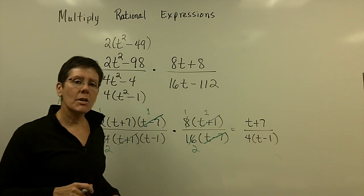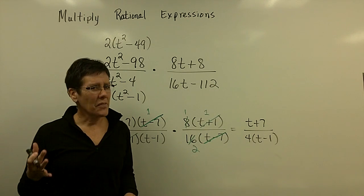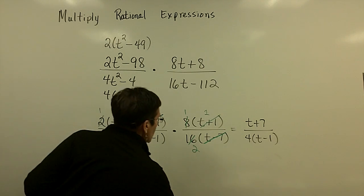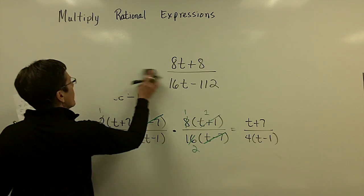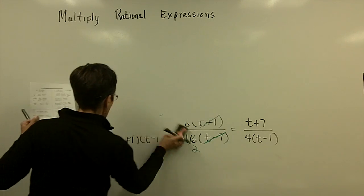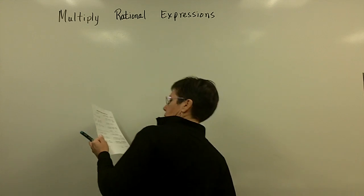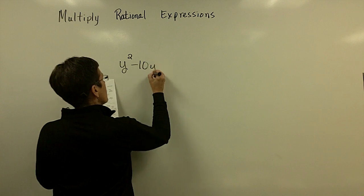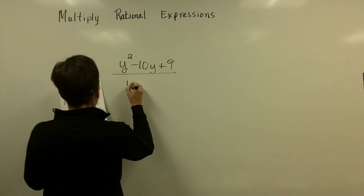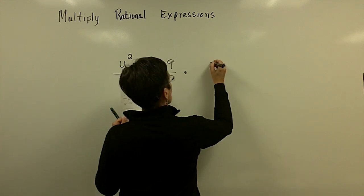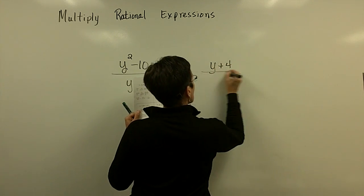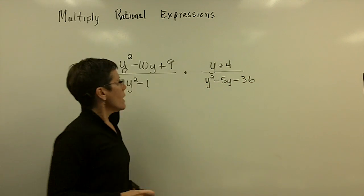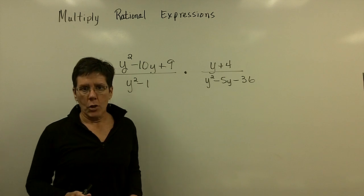And I'm all done. Again, it's called multiplying, but it's really factoring and removing common factors. Let's go ahead and take a look at one more problem. The topic is multiplying rational expressions. Factor everything — I've got a trinomial in the first numerator.